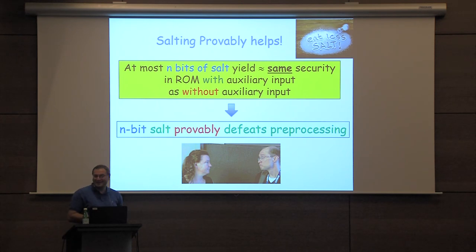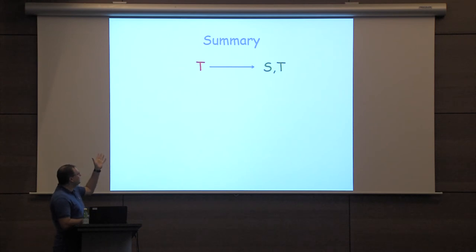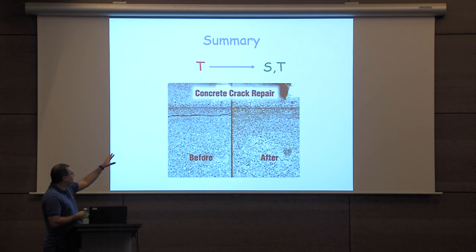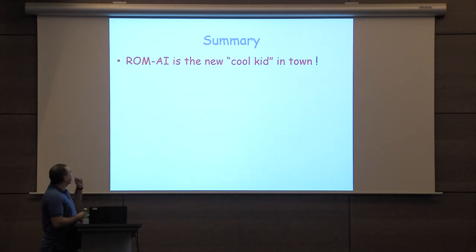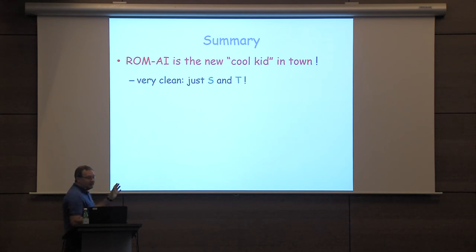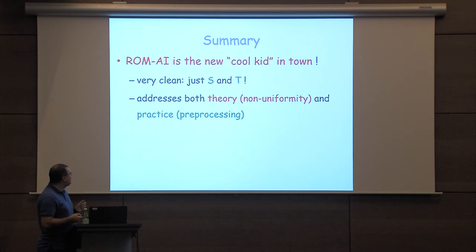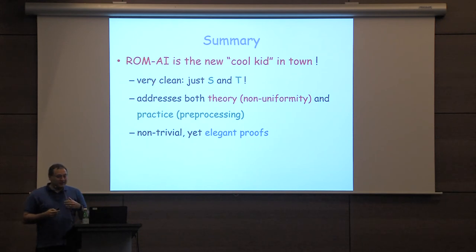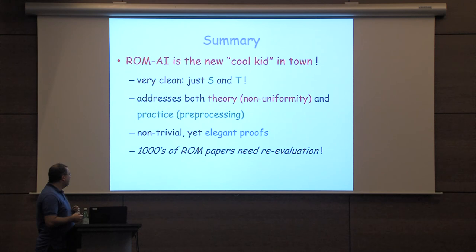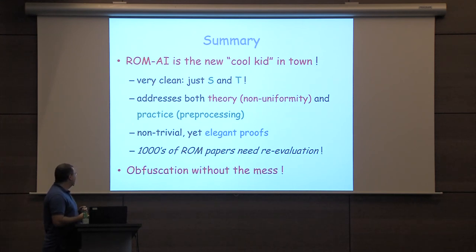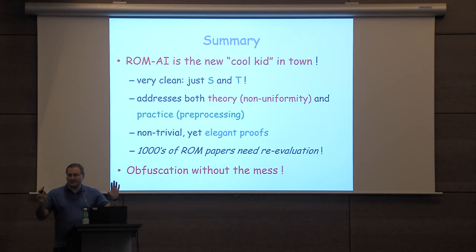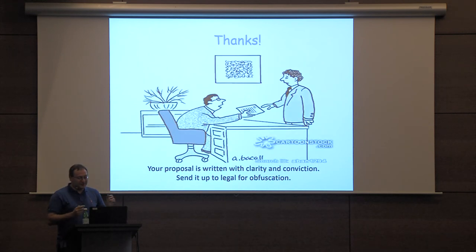So in summary: change from T to S and T — that allows us to fix those cracks in the concrete. I claim that the random oracle with auxiliary input is kind of the new cool kid in town. It's very clean, just two parameters S and T. It addresses both theory and practice — non-uniformity and pre-processing. Unfortunately, it becomes non-trivial; there are elegant proof techniques. But there are thousands of papers in the random oracle model, and essentially all of them need some kind of re-evaluation. You can view it as obfuscation without the math — clean, two parameters, important in practice, and you can flex your muscles without drowning in branching programs.